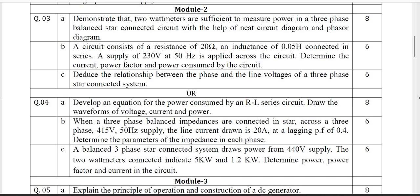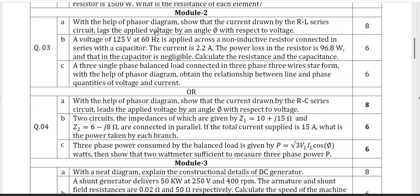Similarly if I move on to Set 2, this is Set 2 question paper. If you concentrate Module 2 questions, these are all the Module 2 questions. See definitely one question will be from RC. Here this proof is very important. There is a proof called P equal to VL IL cos phi. You can prove that proof. These are all the important topics under Module 2.